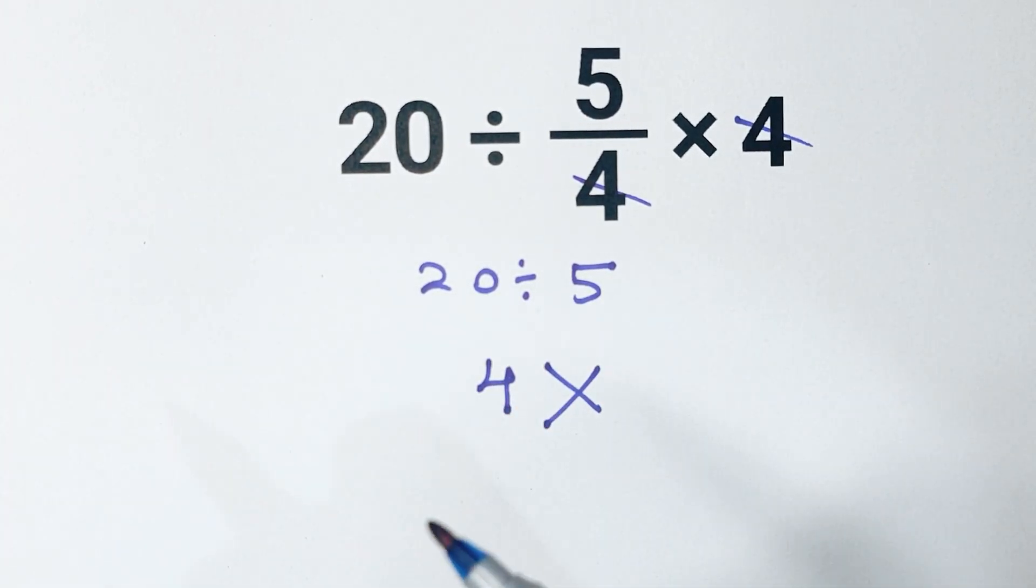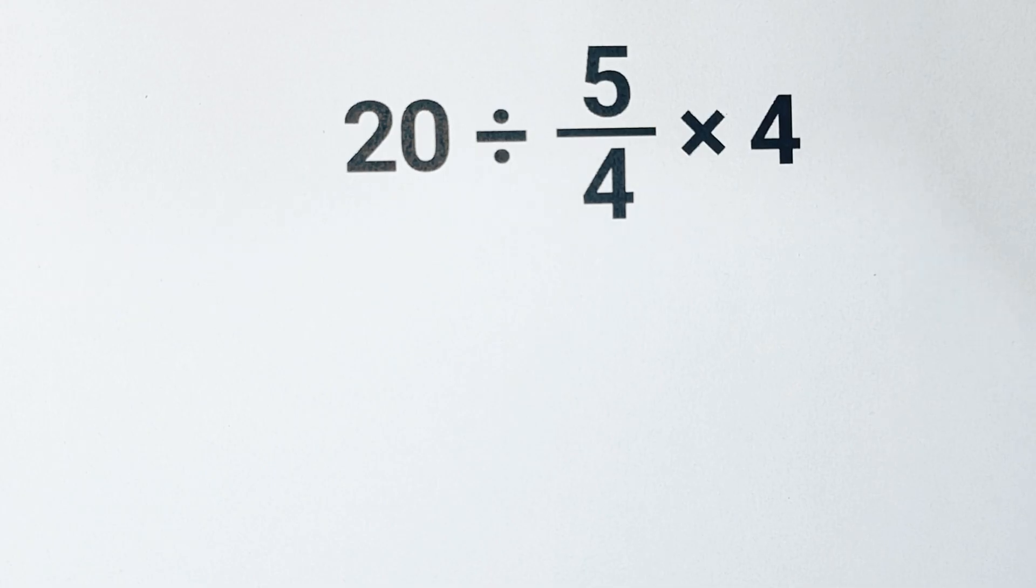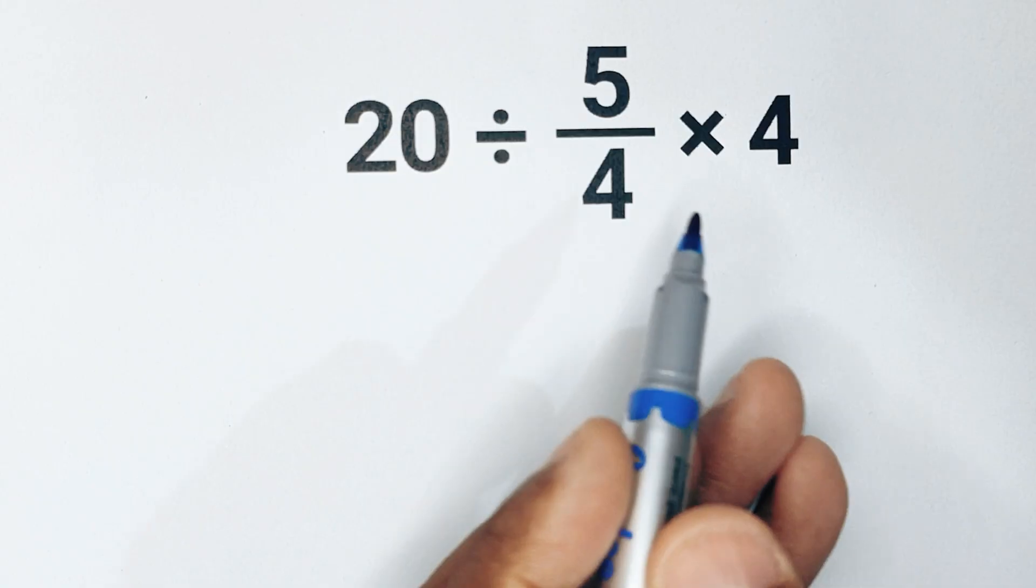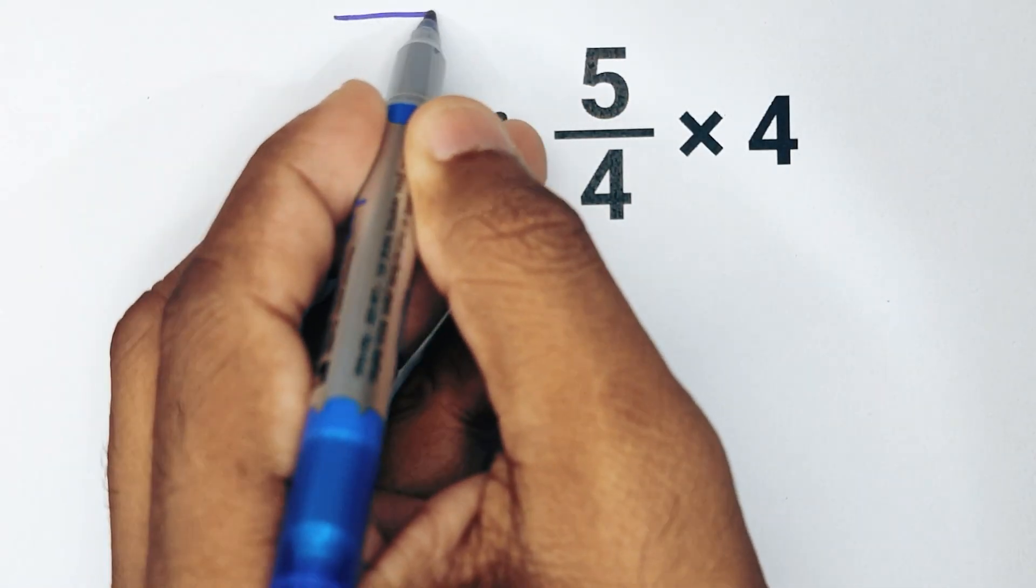Let's see why. Because according to the order of operations, division and multiplication have the same priority and we have to work from left to right.